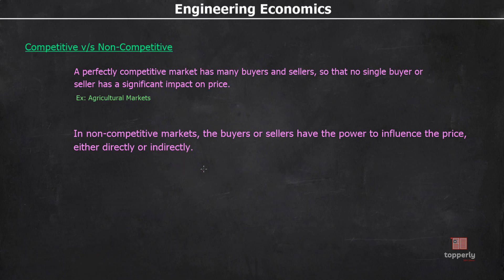In non-competitive markets, buyers or sellers have the power to influence the price either directly or indirectly. They usually exist when there are only a few firms producing a particular product. However, some markets are non-competitive even with many producers — for example, the world oil market. The OPEC Cartel, a group of Middle Eastern countries, jointly decides how much oil to produce. When oil prices dipped under $50 per barrel, OPEC reduced production to create an artificial shortage, causing prices to rise back above $50 per barrel.